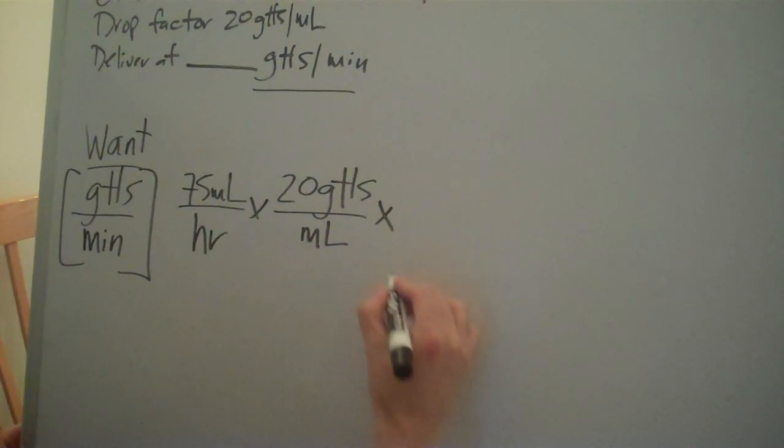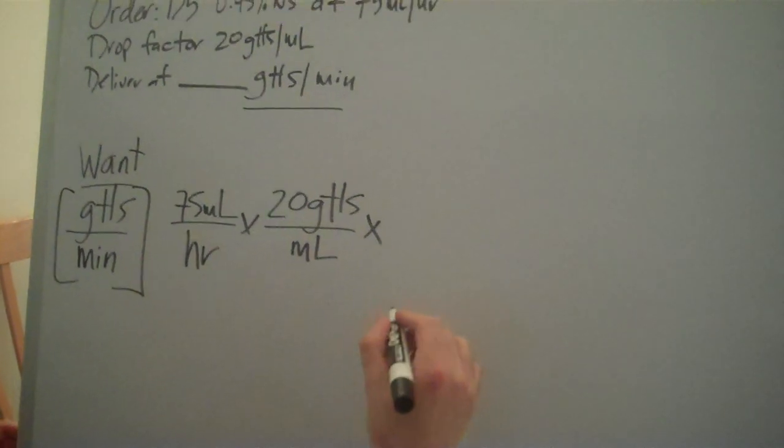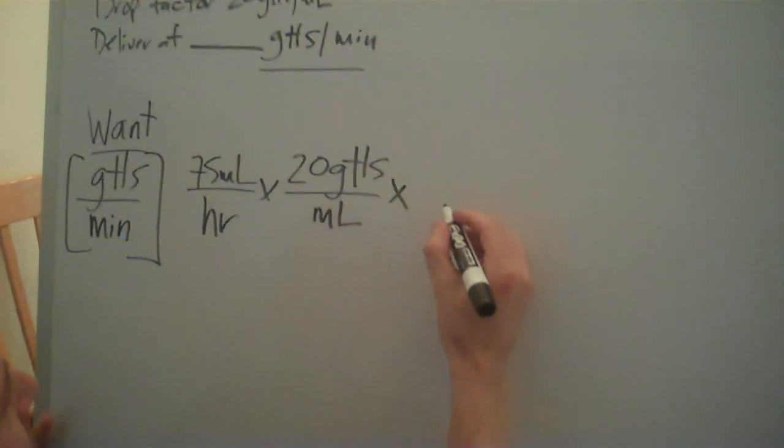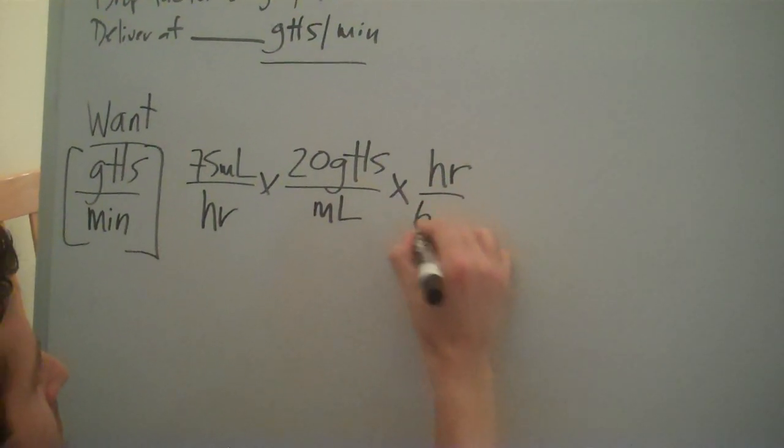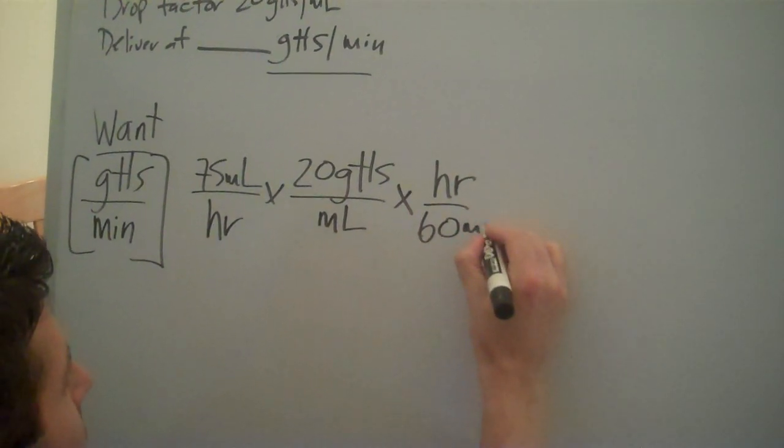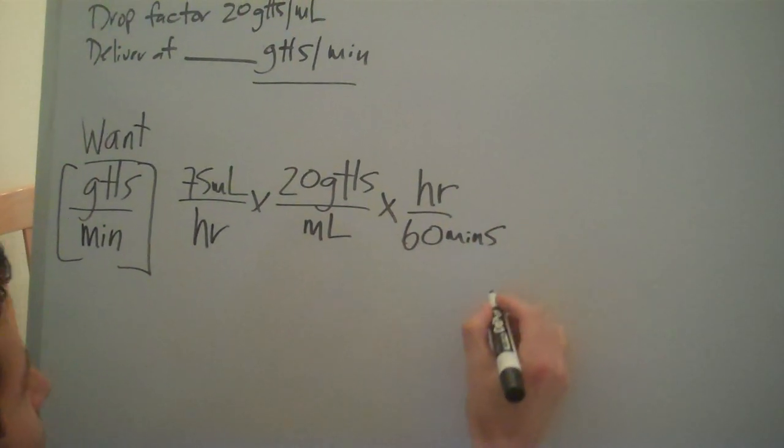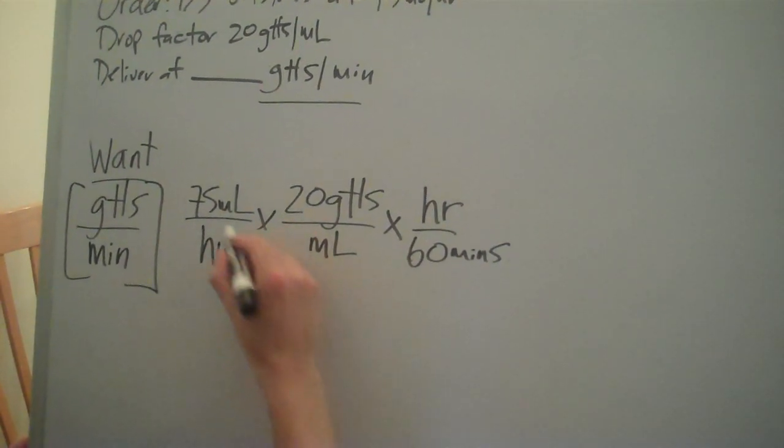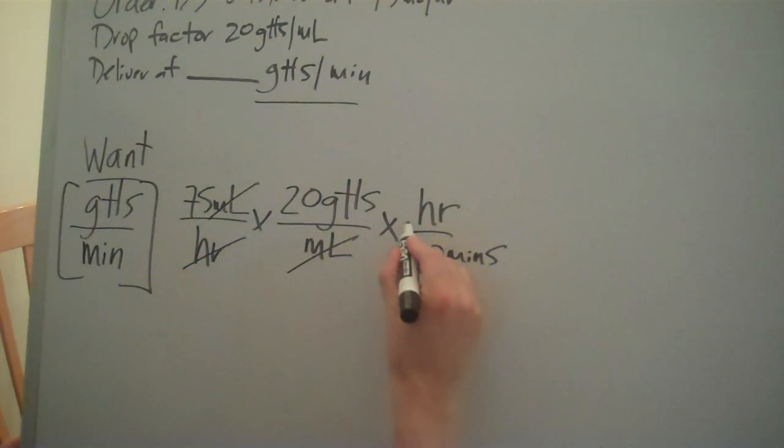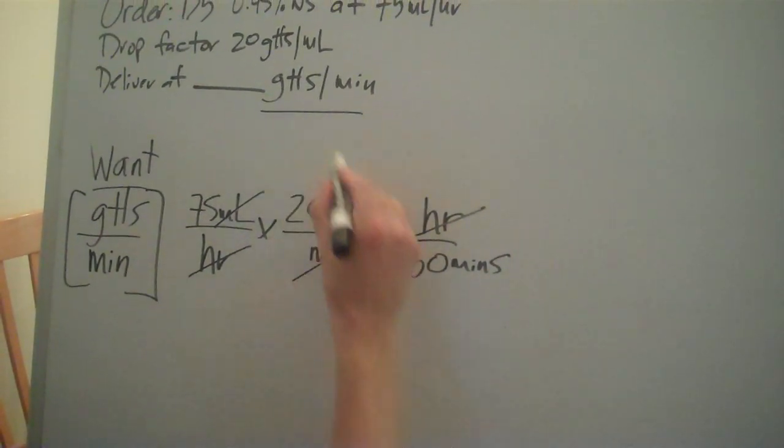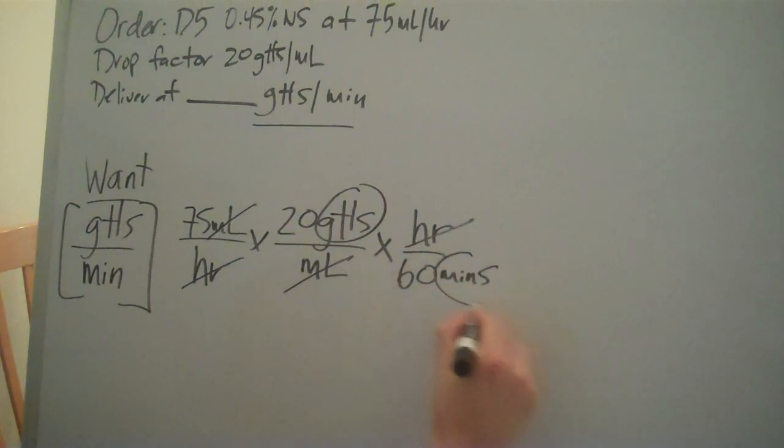And even though we're not given it, we have to input our conversion factor, which is 1 hour equals 60 minutes. And this will help us cancel out our like terms. We have mLs and we have hours, and we want drops per minute.